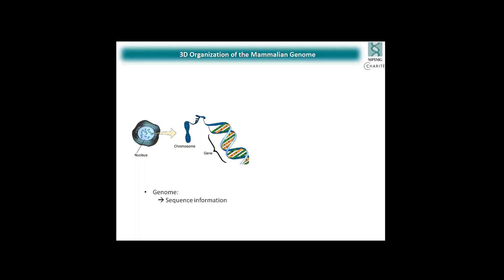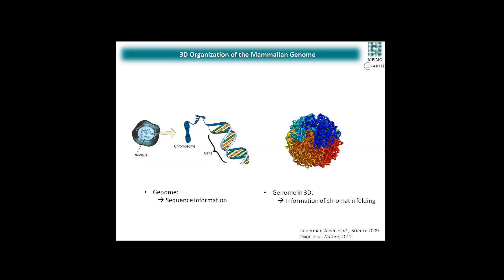Traditionally, we tend to think about our genome in one or two dimensions — meaning we have a stretch of letters, the sequence of our genome, and we can easily identify genes and associated regulatory elements such as enhancers. But in recent years, it has become more and more obvious that there is another level of information encoded in our genome: our genome in 3D. I refer to this as chromatin folding, and this chromatin folding is important for gene regulation.